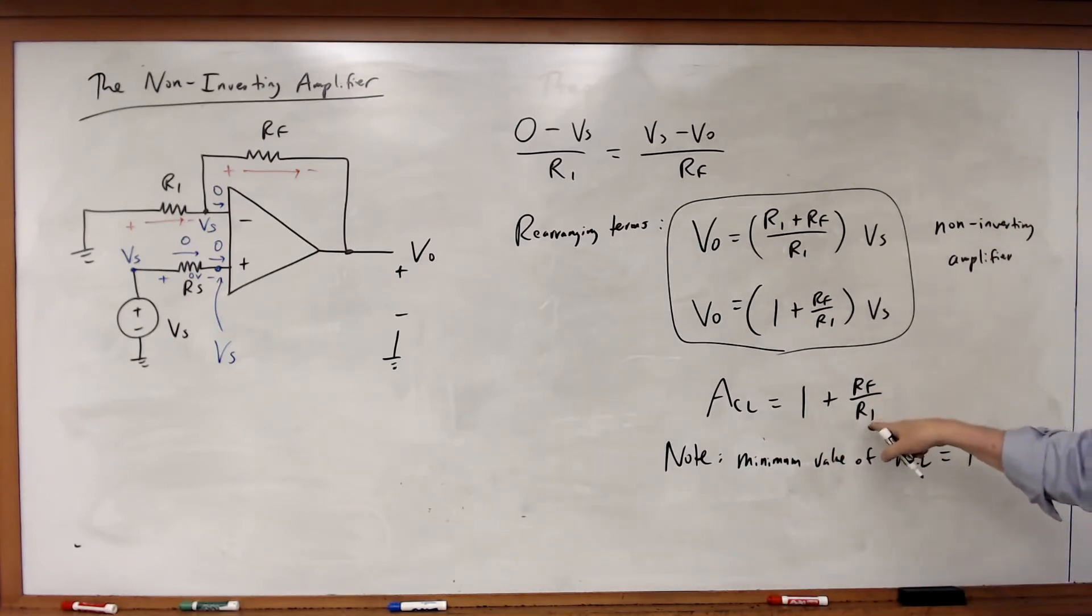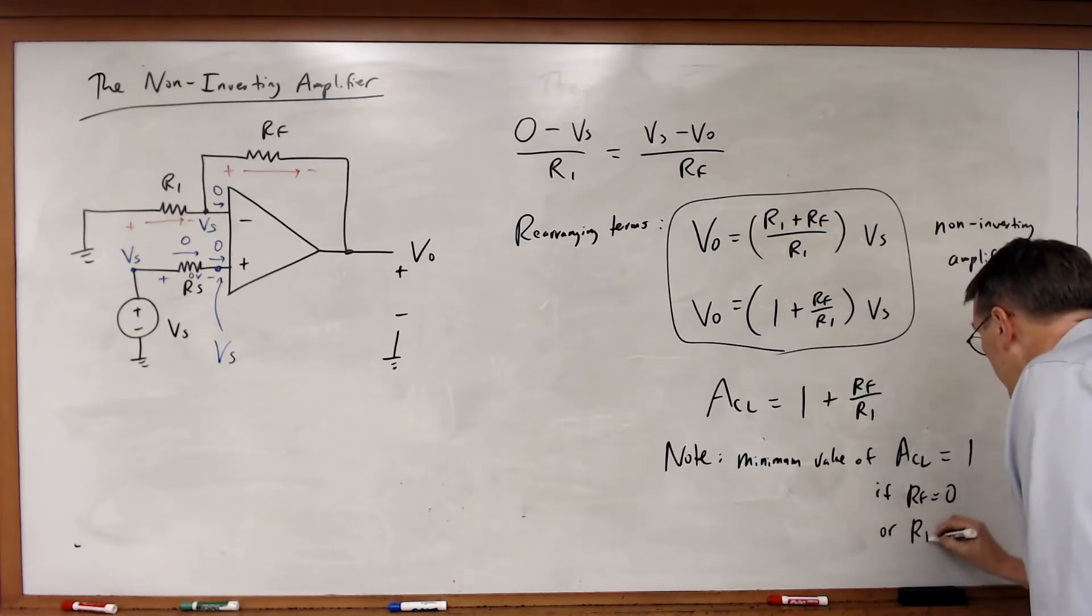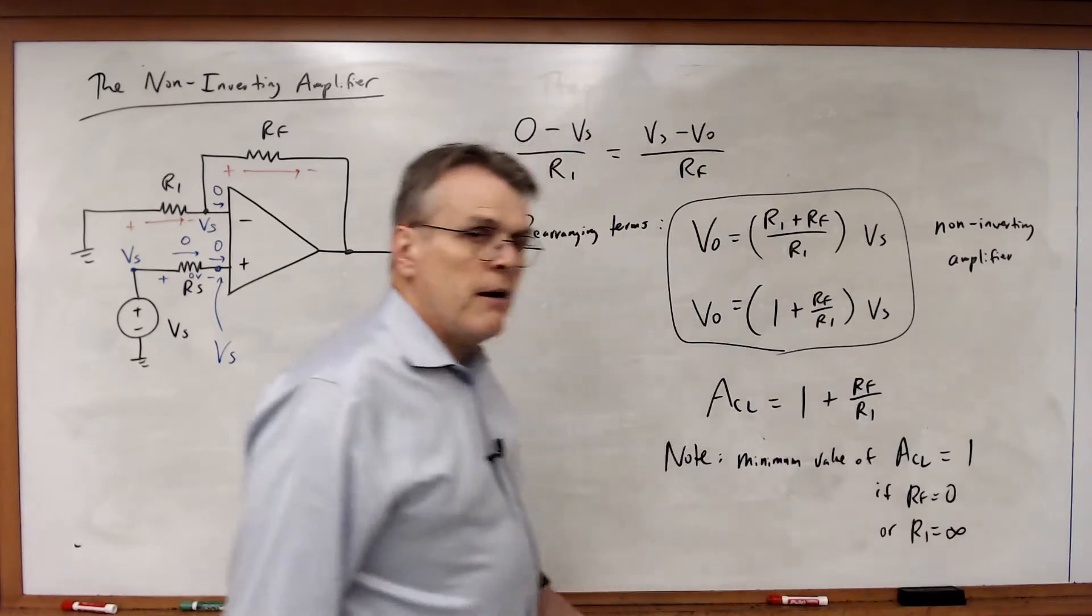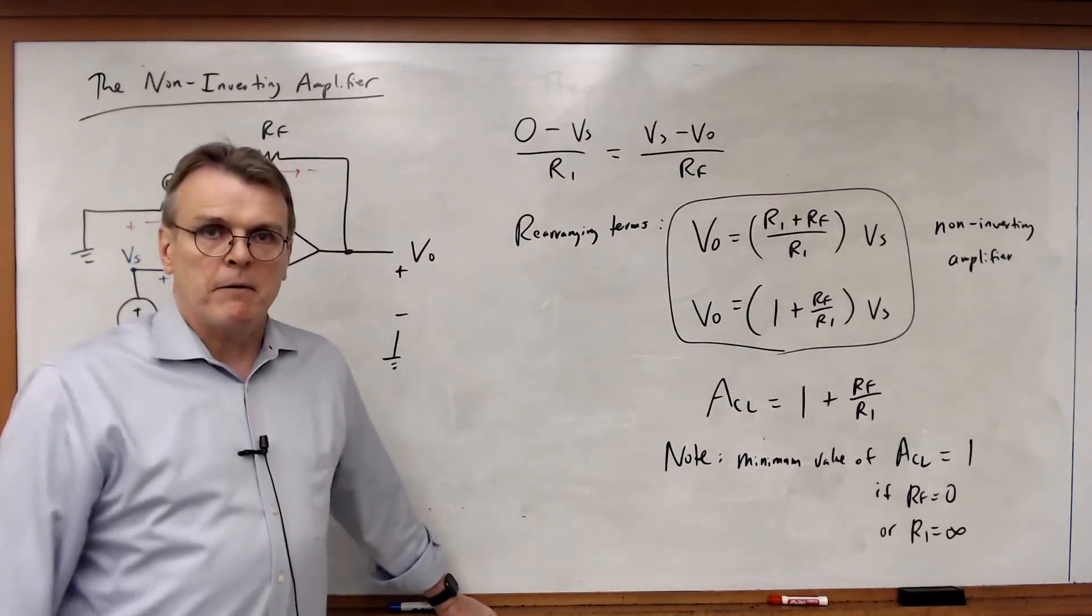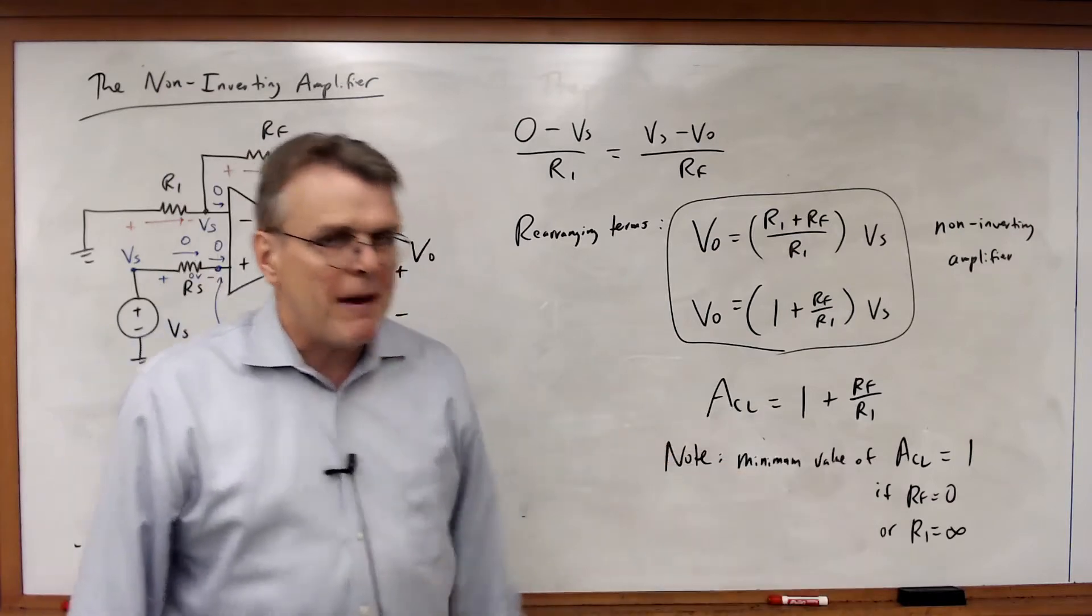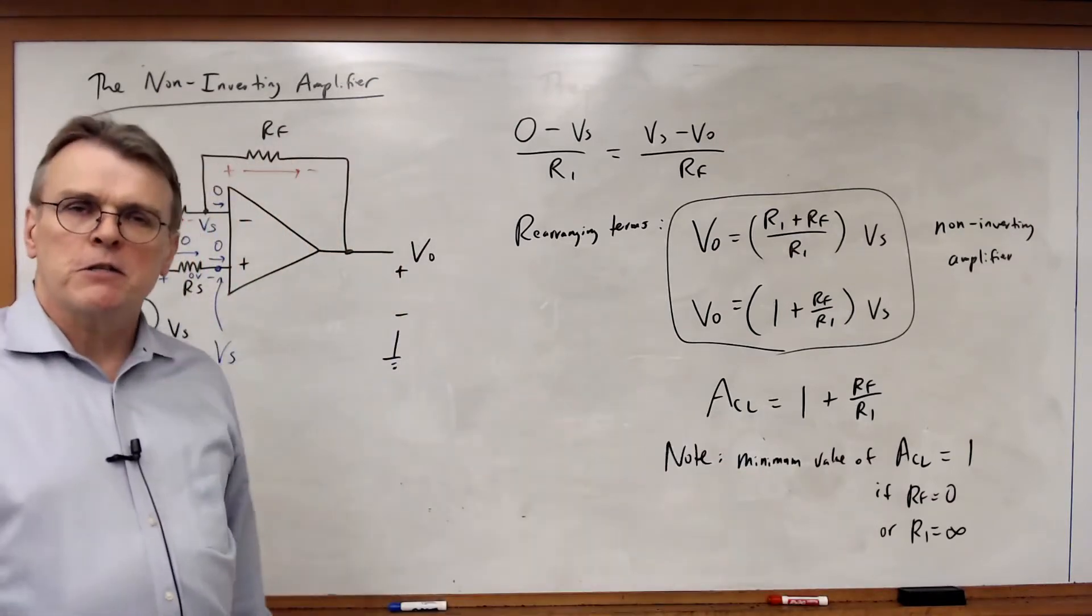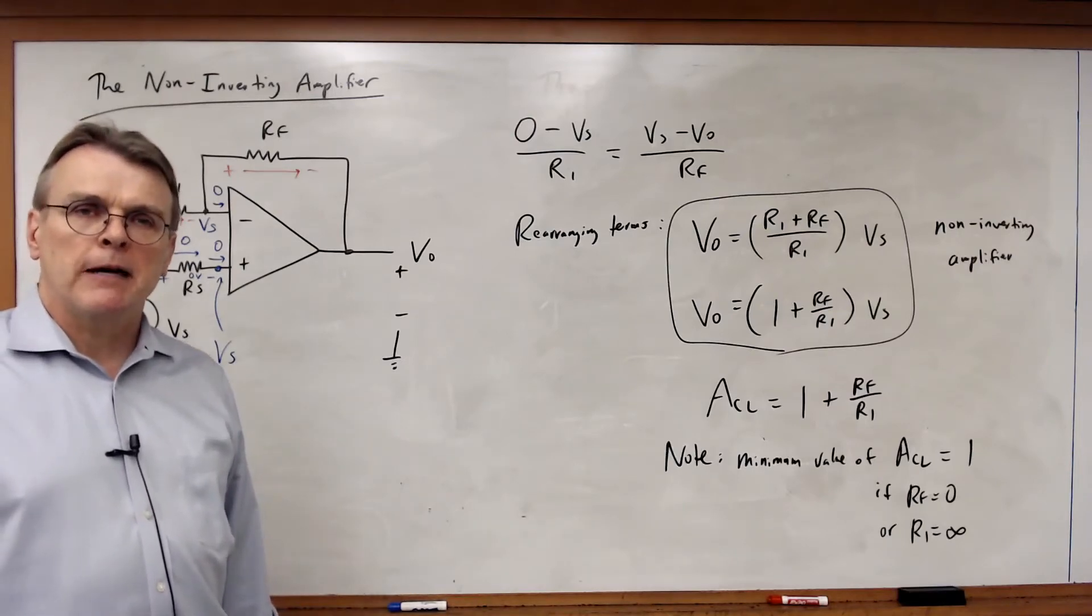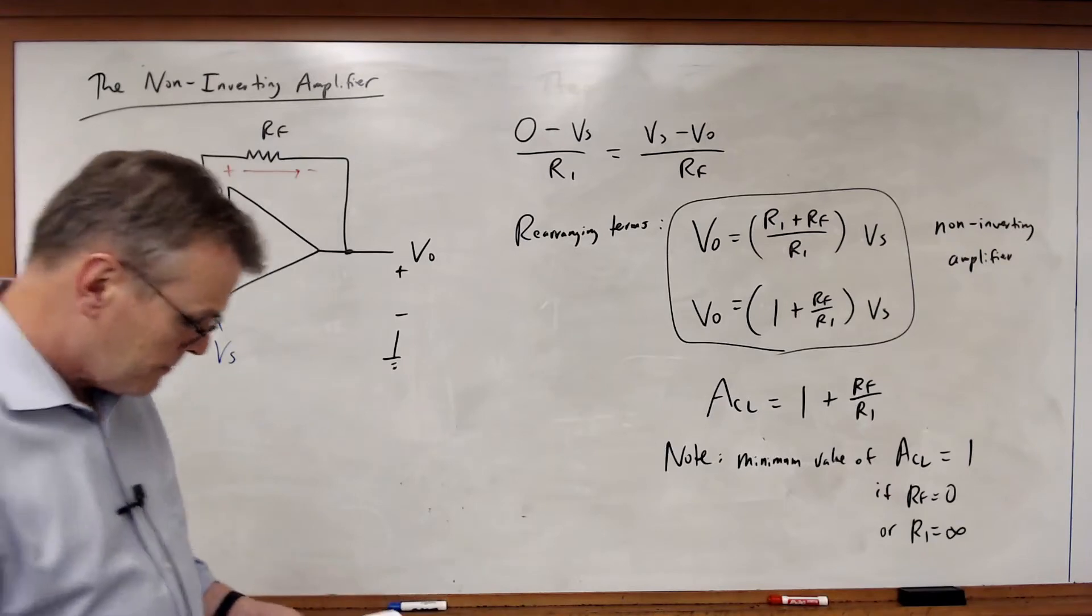If RF is equal to 0 or R1 is equal to infinity. So I can't go down to a minimum magnitude of 0 like I did with the inverting amplifier. I can only go down to a minimum magnitude of 1. And in fact we're going to look at an application of this in just a few minutes. A very interesting application of this idea of a closed loop gain of unity.